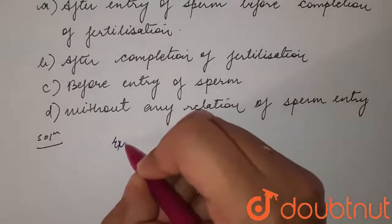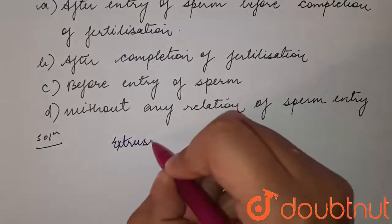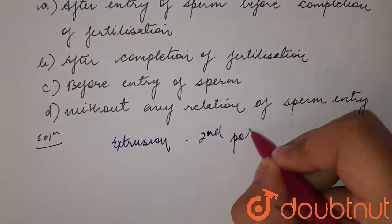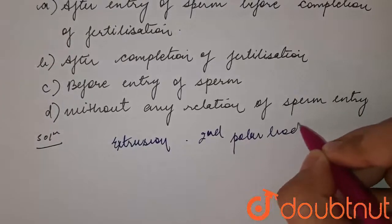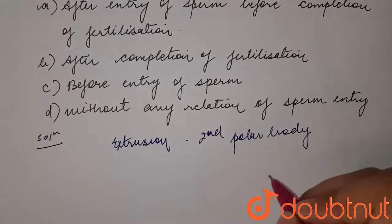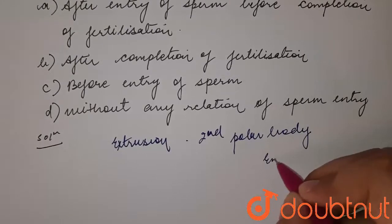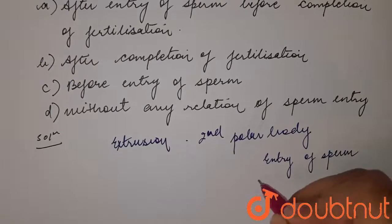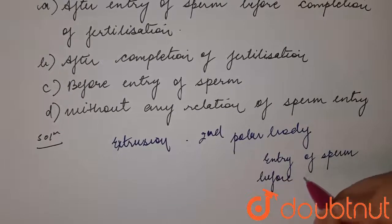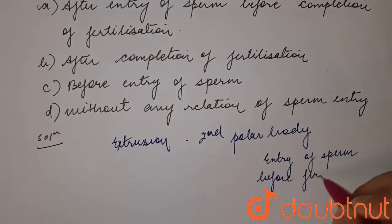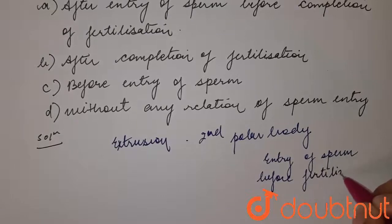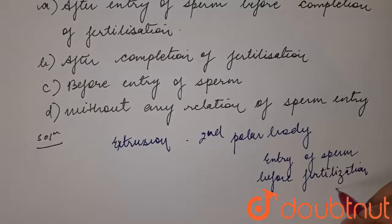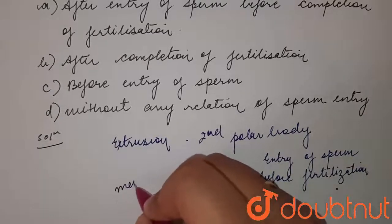The extrusion of the second polar body from the egg nucleus occurs after the entry of sperm but before fertilization. The entry of sperm into the ovum induces the completion of the meiotic division.